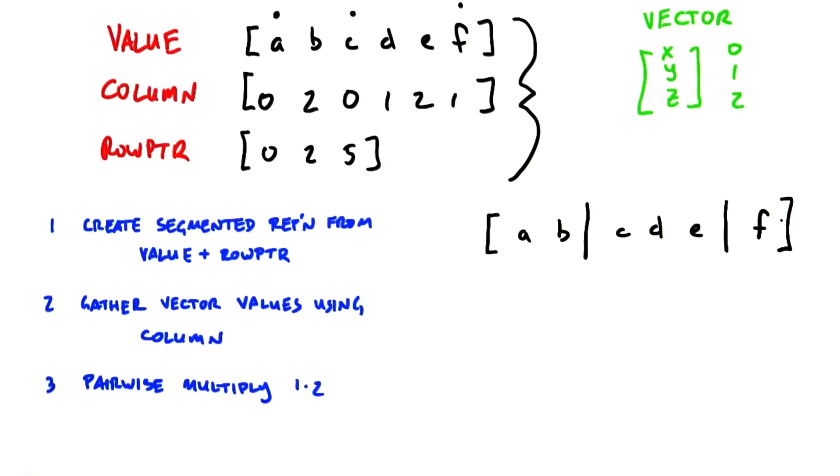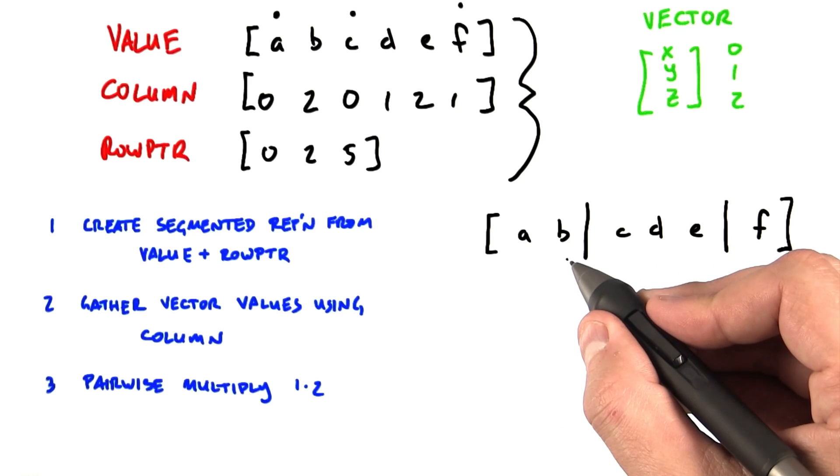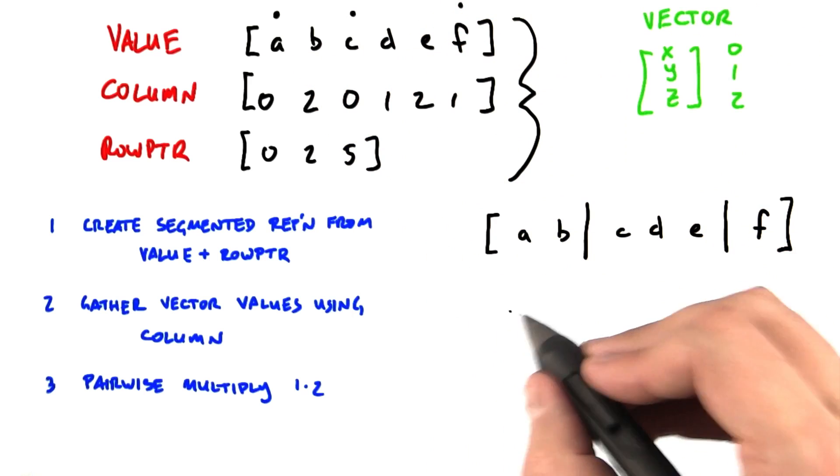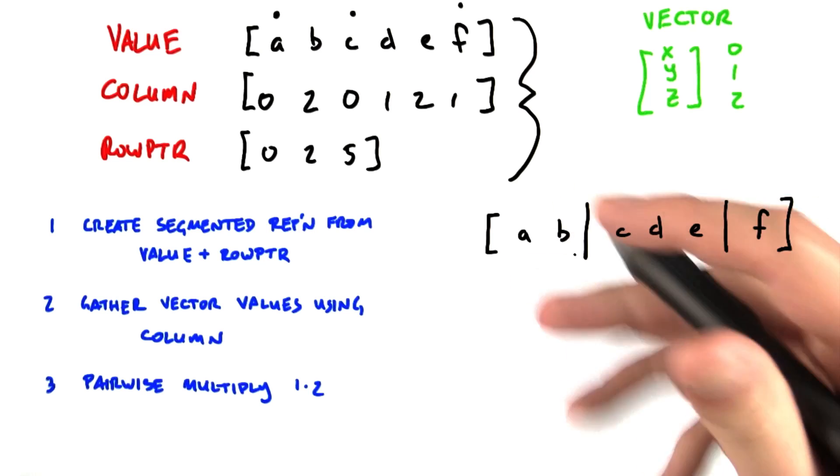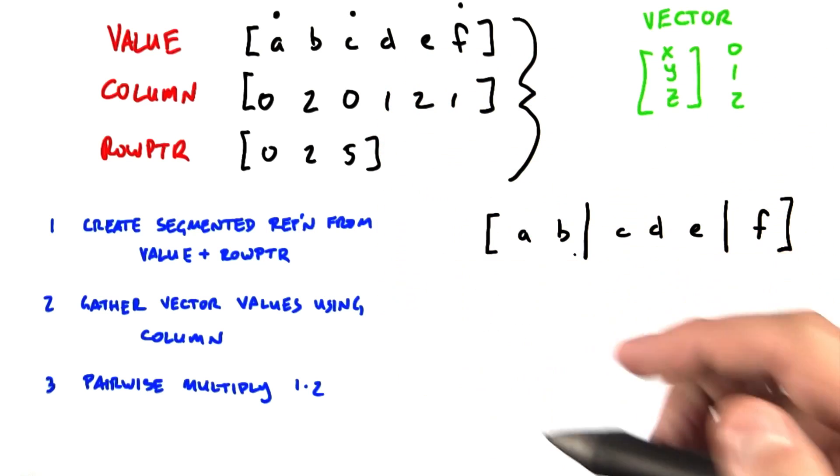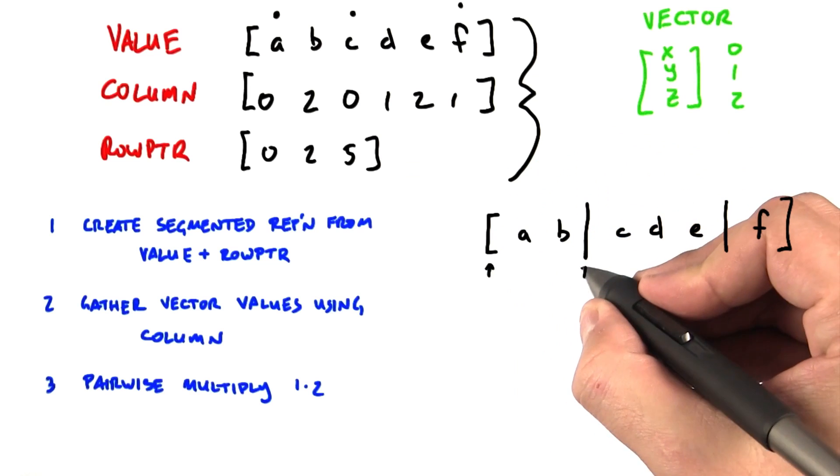The first thing we're going to do is take the value vector and the row pointer vector, and together we're going to create a segmented representation of the value vector. Note that each segment in this resulting vector represents one row of the sparse matrix, and the row pointer shows where each segment head begins.